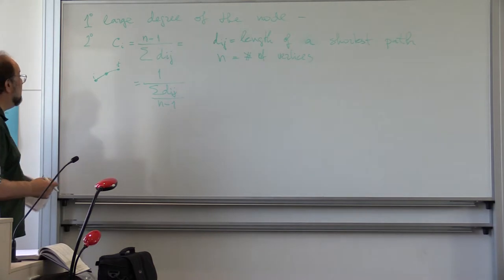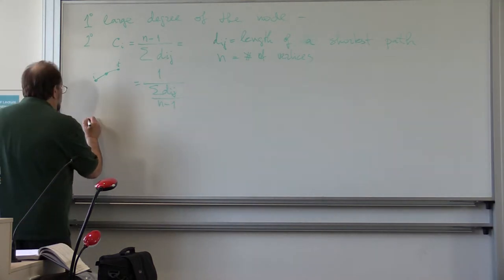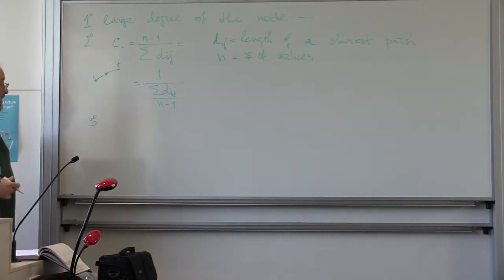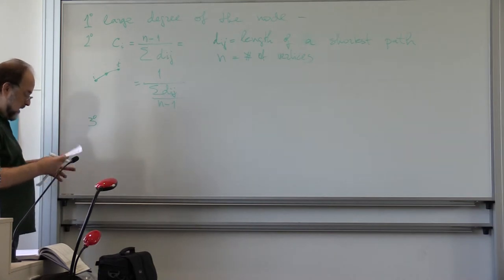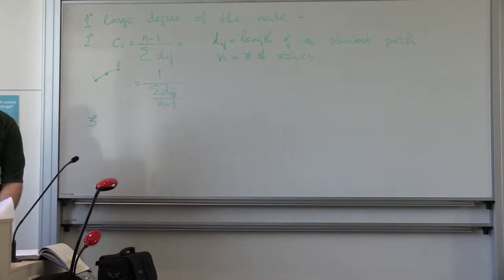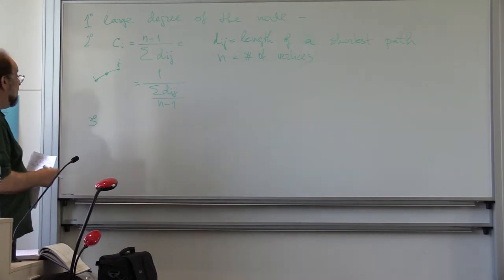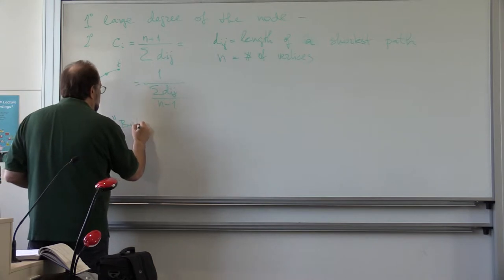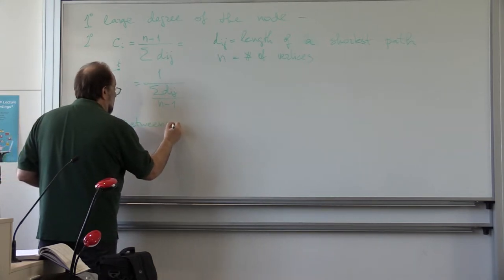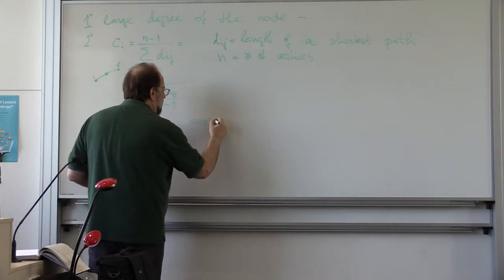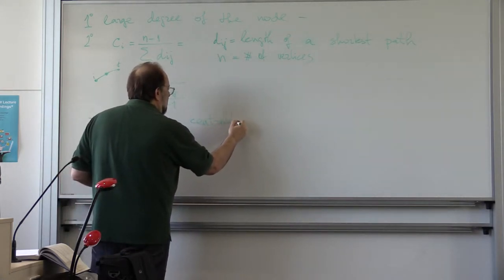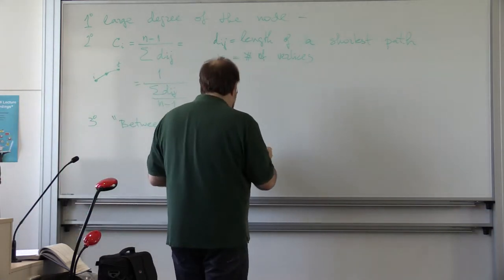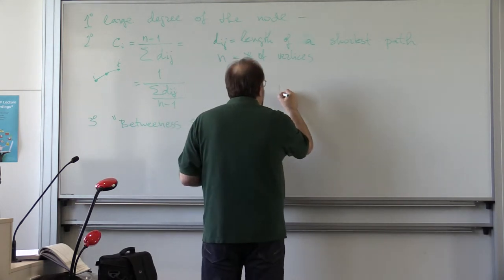But it turns out it's not the optimal one. Of course, what does it mean optimal? That's optimal in some heuristic sense. So the third notion is betweenness centrality.